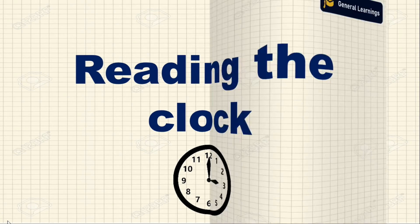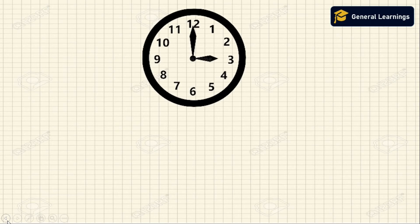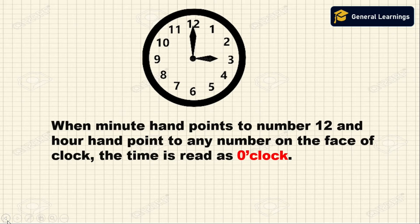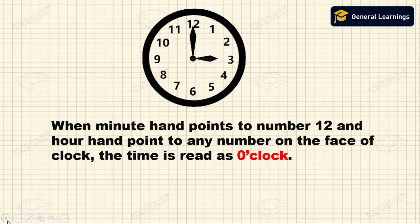Next we will see how to read the clock. When the minute hand points to number 12 and the hour hand points to any number on the face of the clock, the time is read as o'clock. For example, if the minute hand is pointing to 12 and the hour hand is pointing to 3, the time is 3 o'clock.